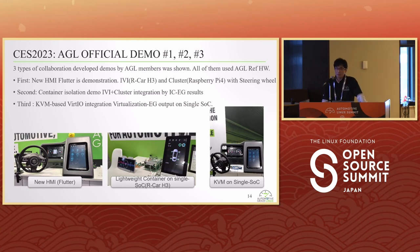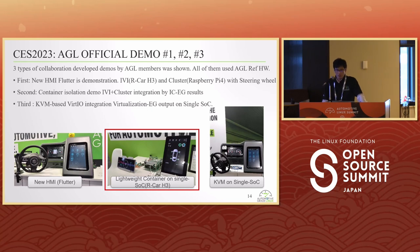In the beginning of this year, our collaboration output was exhibited at CES 2023. There were three types of collaboration demonstrations. First, an IVI and new HMI Flutter demonstration. Second, our output — a container isolation demo using IVI and cluster integrated by ICEG work. Third, a similar integration on a single SoC using QVM-based VATIO integration.